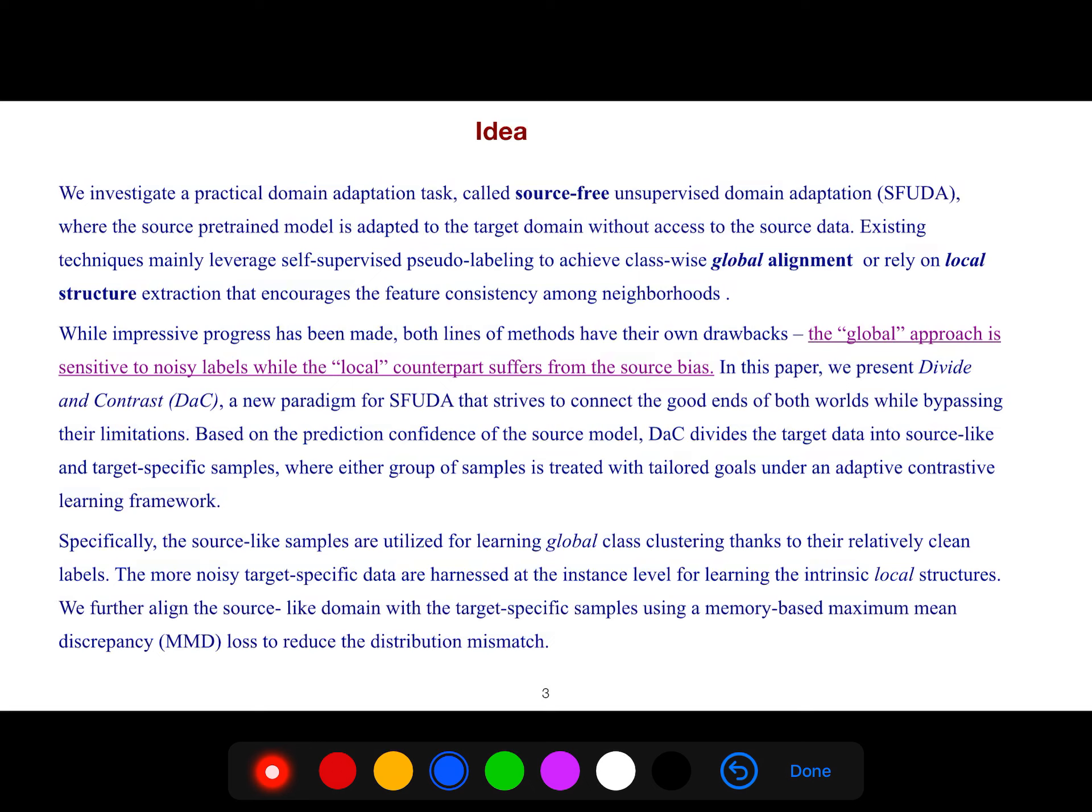Based on the prediction confidence of the source model, DaC divides the target data into source-like and target-specific samples, where each group of samples is treated with tailored goals under an adaptive contrastive learning framework.